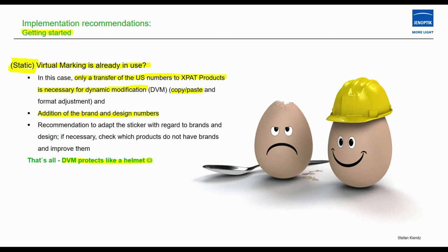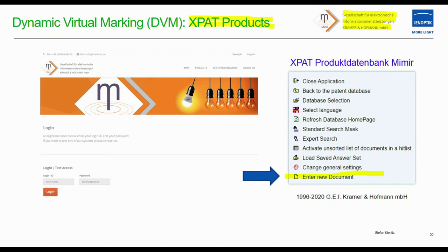If static virtual marking is already in use, that's great. In that case, only a transfer of the US patent numbers to export products is necessary for dynamic modification to DVM — so it's essentially copy and paste, plus the addition of brand and design numbers. That's all. DVM protects like a helmet.